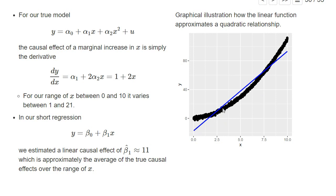Basically, the slope we estimate in the linear specification is the mean of the different slopes in the quadratic function. So if we estimate a constant causal effect with a linear specification, we typically think of it as a mean of the possible causal effects that may differ with the values of x. The mean between 1 and 21 is 11, which is exactly what we estimated. Whether it's a good or bad approximation depends on how non-linear the function is and on the value of x — around the center where x equals 5, the true causal effect is indeed 11, but at the borders we are far off: the true causal effect would be 21 while our linear specification measures only 11.